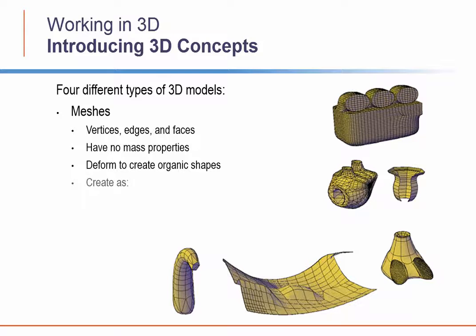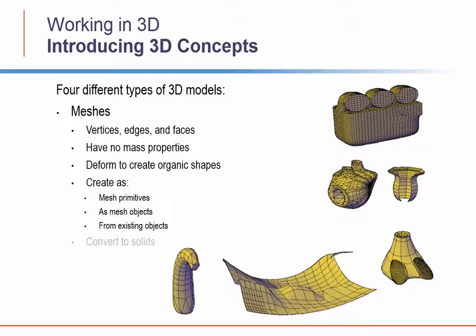Meshes enable you to create much more rounded or organic shapes. You can create mesh objects as mesh primitives such as boxes, cones, cylinders, spheres, and so on. You can also create mesh objects as ruled, tabulated, revolved, or edge-defined mesh objects. You can also convert other objects such as existing solid or surface models into mesh objects, and you can convert meshes into solids.